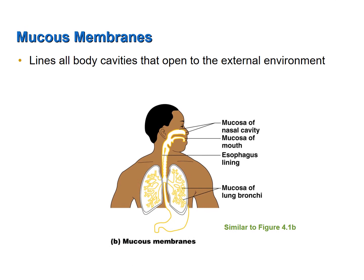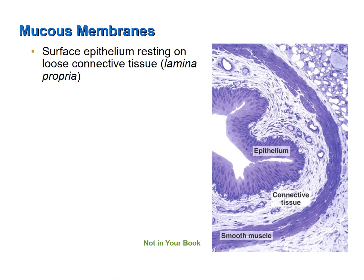Mucous membranes line all the body cavities that open to the external environment, such as your respiratory tract, digestive tract, urinary tract, and reproductive tract. Mucous membranes get their name from the fact that they are always wet, due to the large number of glands that secrete mucus onto the membrane surface. Mucous membranes are always involved in absorption and/or secretion. Like all epithelial membranes, they consist of an outer layer of epithelial tissue resting on an inner layer of connective tissue, which in mucous membranes is loose connective tissue referred to as the lamina propria.